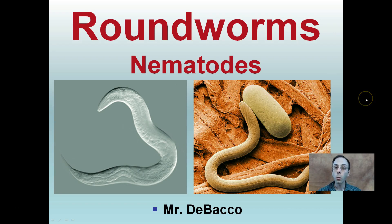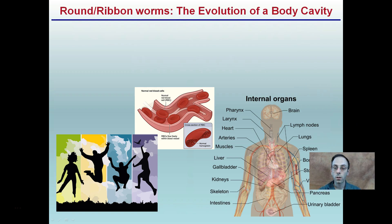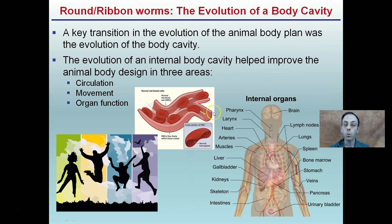Here we're going to look at roundworms or nematodes, and we see two pictured right here. We're going to get into a little more detail of what defines these as animals. Starting in general, the evolution of a body cavity is one distinguishing factor. I show some human examples here to help reiterate the point, but remember we are talking about nematodes. This body cavity is a key evolutionary step, and it helps improve animal body design in three main areas.